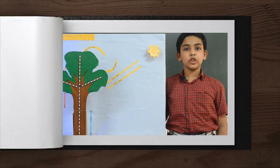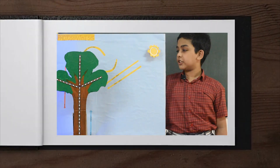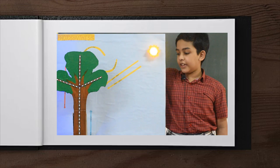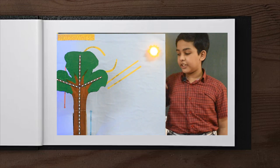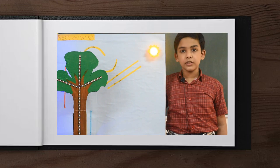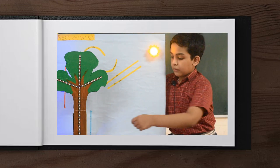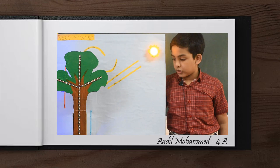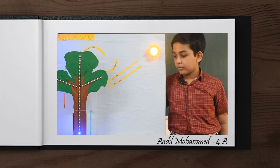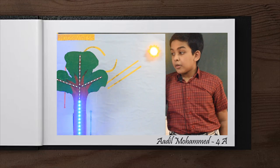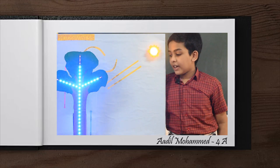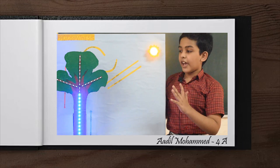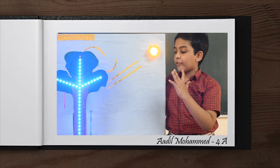This model shows photosynthesis. During daytime, green plants make the food. The plant takes water through the roots. Plants take carbon dioxide from the air and make food.